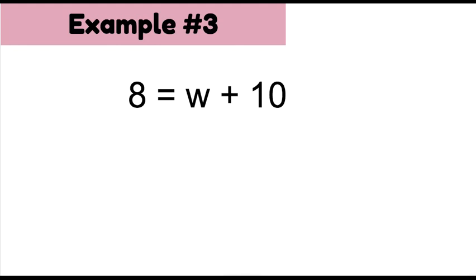Example number three. 8 equals W plus 10. Now, things look a little different. My variable is now on the right-hand side, but we don't change our process. We can continue the way we have it set. Step one, simplify. Anything to simplify on the left? Nope. Anything to simplify on the right? Nope.